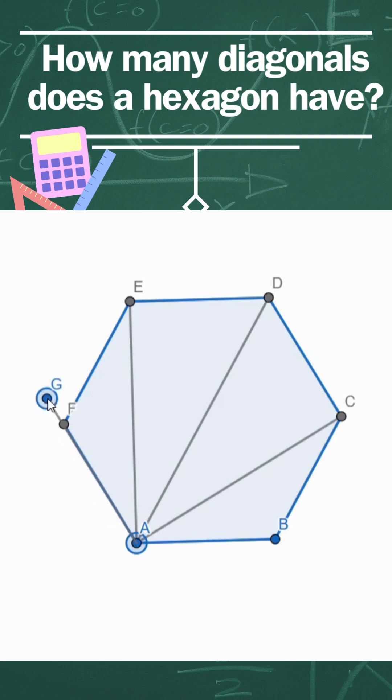Now from vertex B. B to C is an edge, so no diagonal. B to D skips a vertex, so that's a diagonal. B to E is another diagonal. B to F is an edge, so no.